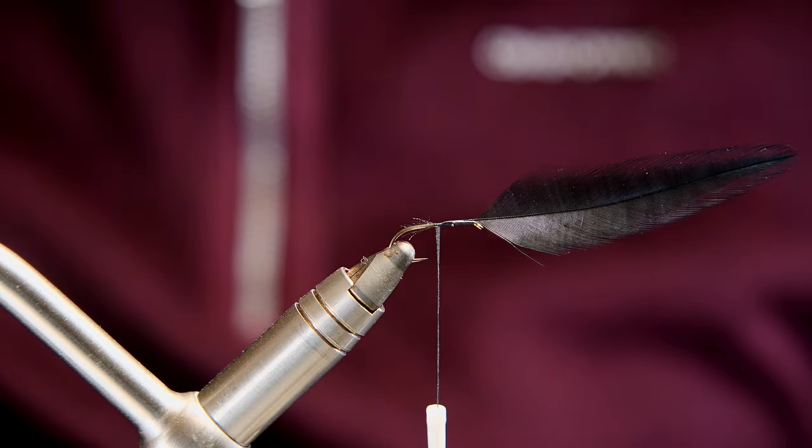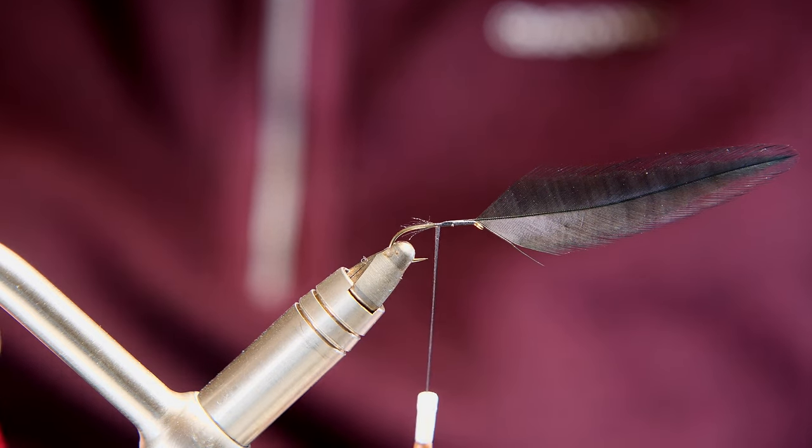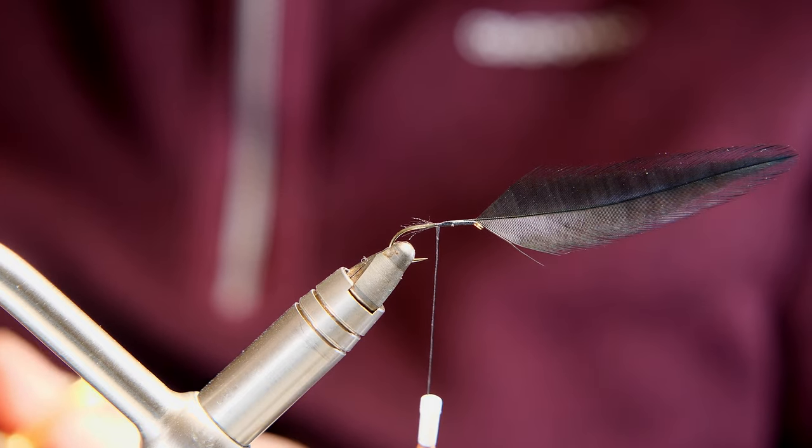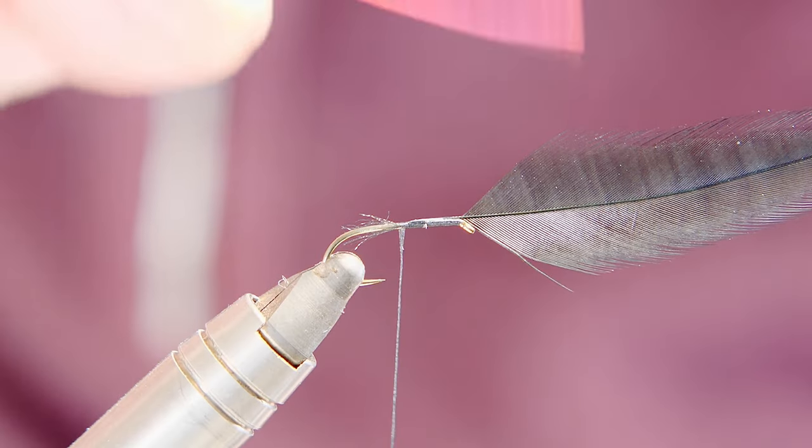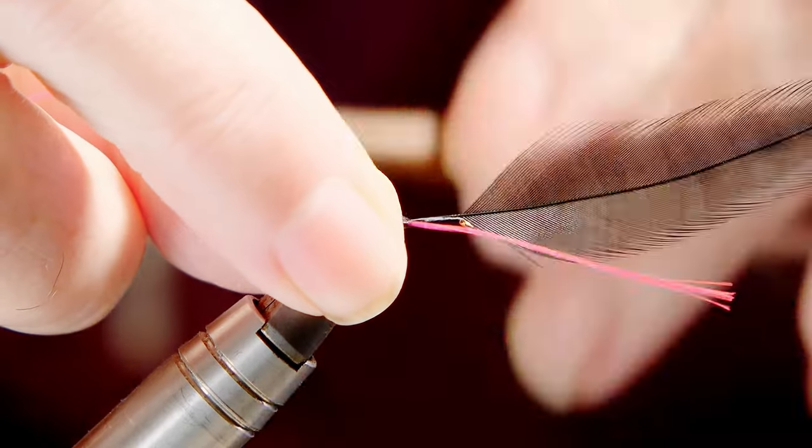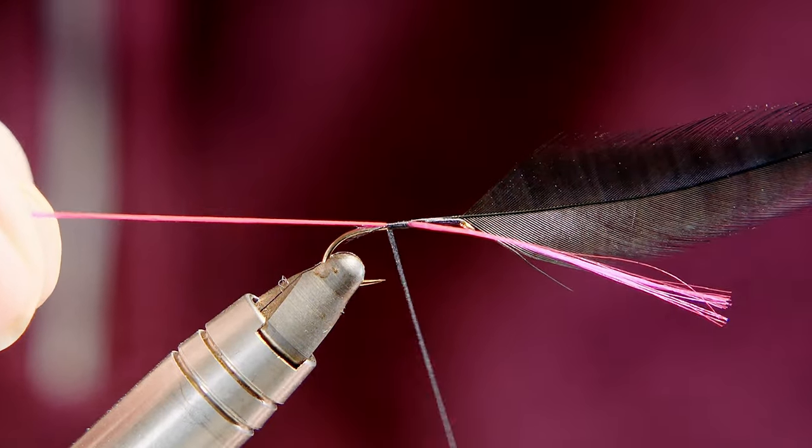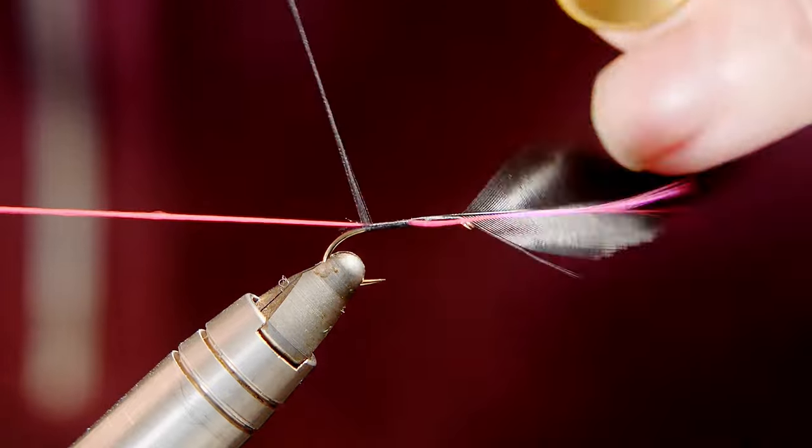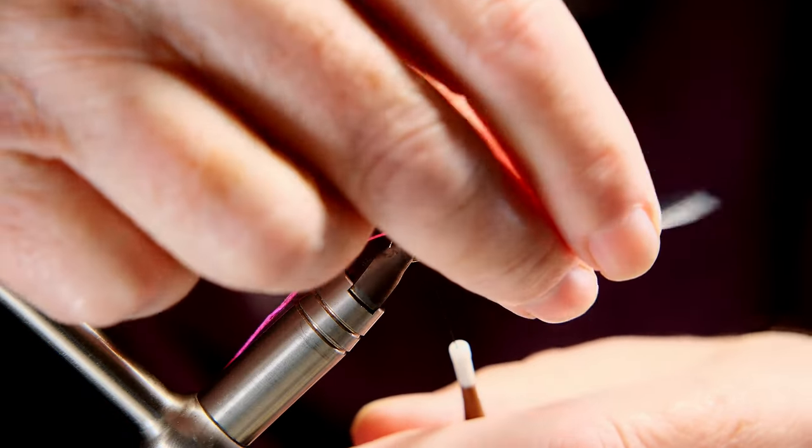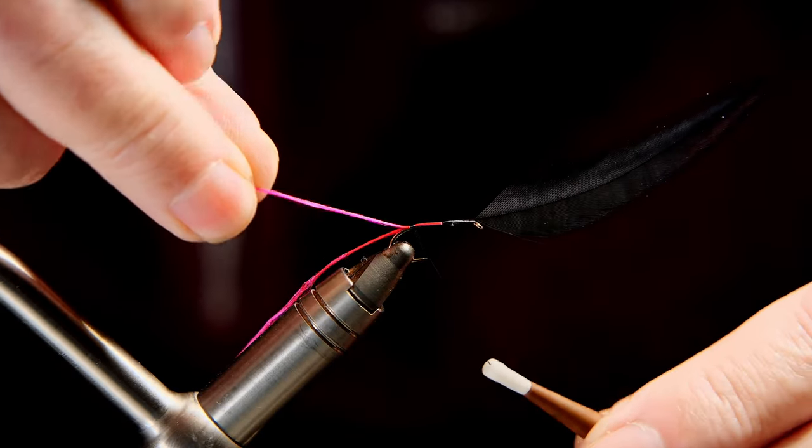So I've just attached a larger black hen hackle and I'm going to put on a little bit of this again, this neon magenta. So I want to tie it with a piece dangling up there, you'll see why in a minute. And this time go to about the barb of the hook, then that other loose end forwards.